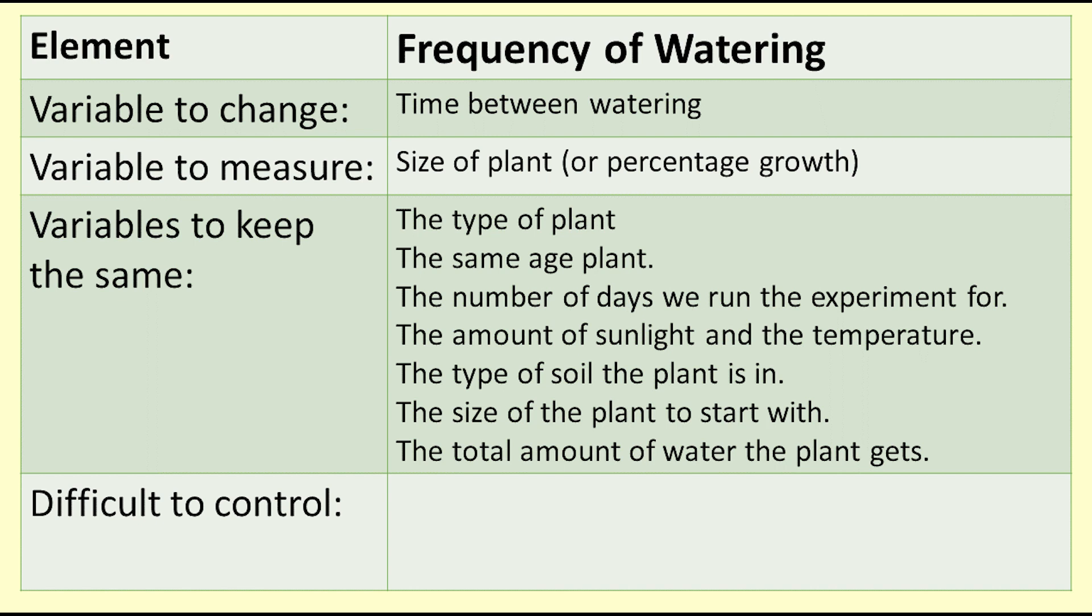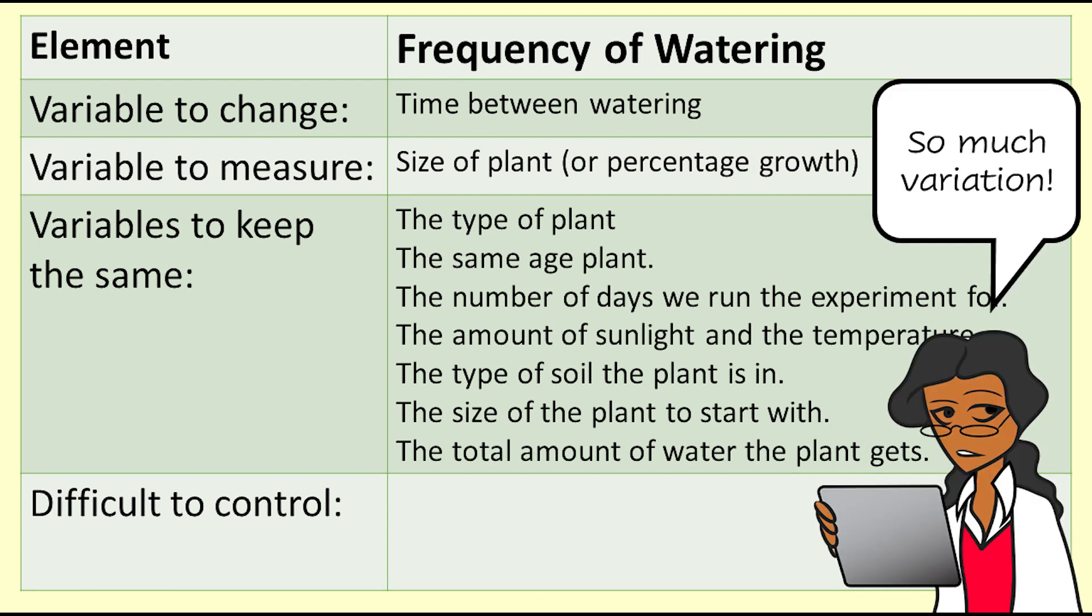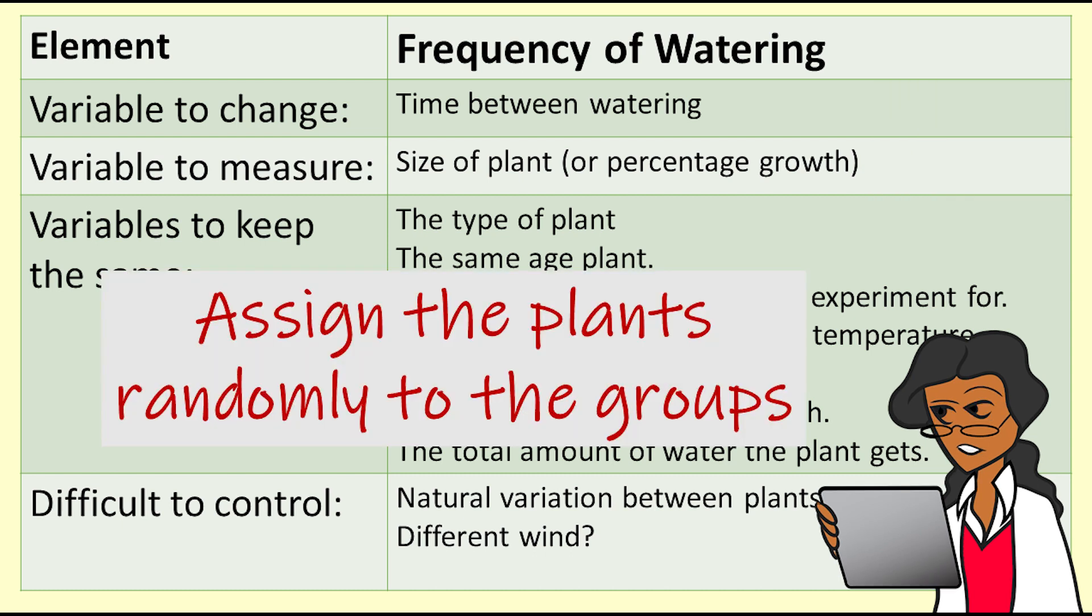Here is a list of some variables to keep the same: the same type of plant, the same age plant, the number of days we run the experiment for, the amount of sunlight and the temperature, the type of soil the plant is in, the size of the plant to start with, and the total amount of water the plant gets. There are some things we cannot control, including the variation between plants. So to make up for that, we need to assign the plants randomly to the groups. That way any other variation will occur randomly between the two groups and the only thing that is consistently different between the groups is the value of the explanatory variable, in this case the frequency of watering.